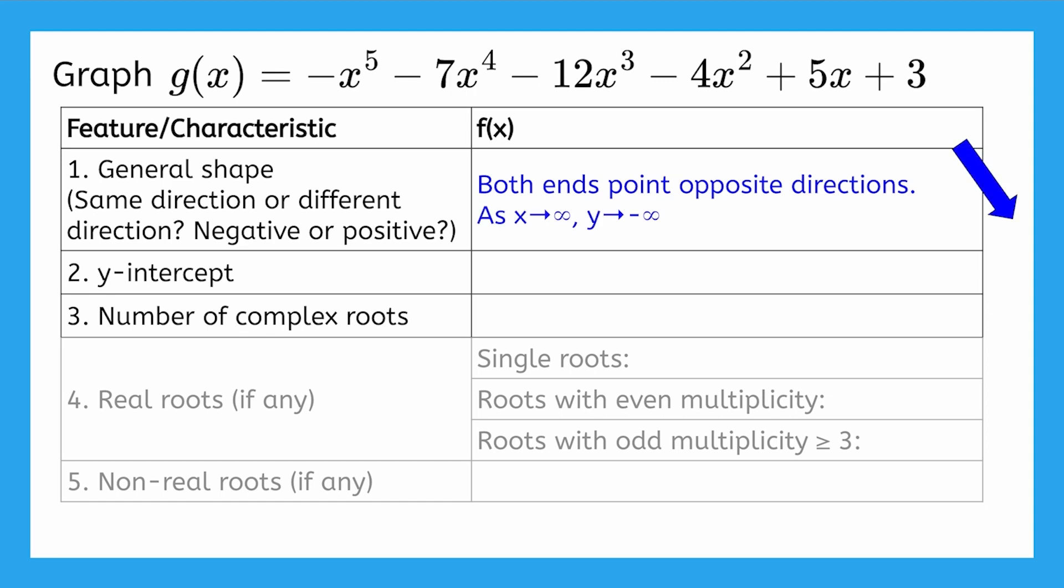And as x goes to negative infinity, y goes to positive infinity. You can draw a quick sketch if you like, or you might want to just have a few arrows as a reminder. These next two should be familiar. The y-intercept is positive 3, and the function has 5 complex roots. Okay, that's all we can do for now.